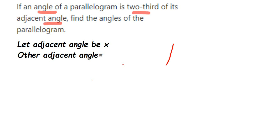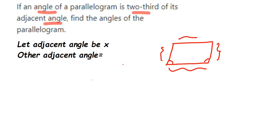In a parallelogram, if you add any two adjacent angles, the sum is always 180 degrees. We are going to use this property here, along with the relationship between the adjacent angles that has been given.